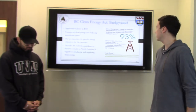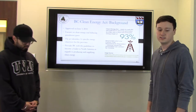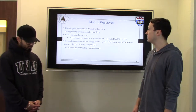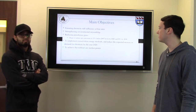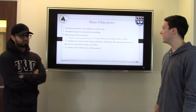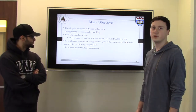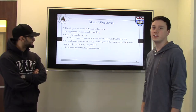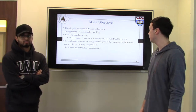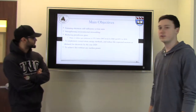The Act seeks to make BC self-sufficient in electricity generation by 2016, with a clean and renewable energy target of 93%. The main objectives include ensuring electricity self-sufficiency at low rates, strengthening environmental stewardship, and reducing greenhouse gases — with a goal to reduce emissions to 33% below 2007 levels by 2020 and 80% by 2050. They also want to reduce expected increases in electricity demand by 2020, and achieve this without any nuclear power.